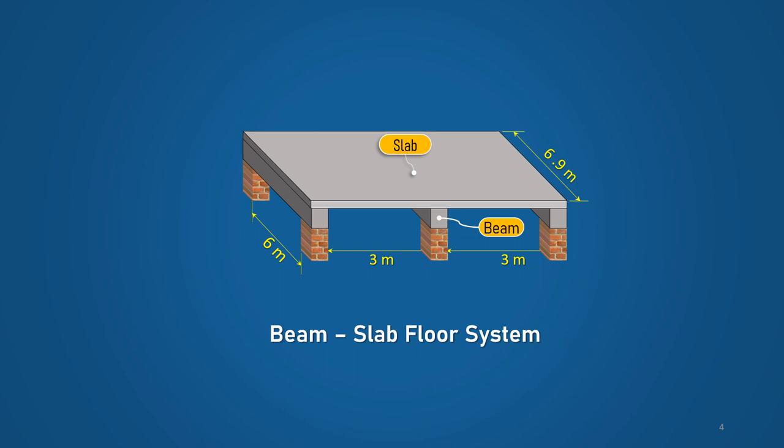Before further calculations, let us understand the basic concepts of T-Beam in brief. In the beam-slab floor system, the casting of slab and beam is monolithic. Therefore, in this system, a portion of the slab of width BF acts monolithically with the rectangular section of the beam, giving rise to a T-Beam.